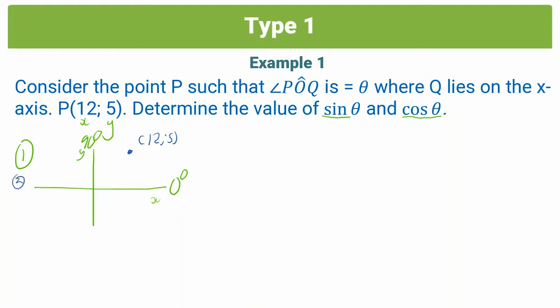Step 2 is to construct our triangle. We know that y is 5, this is going to be our r (our radius) which we don't know yet, and this is going to be our x, which in this case we are told is 12. So now we can go on to step 3, which is to use Pythagoras to find the missing variable — in this case, r.